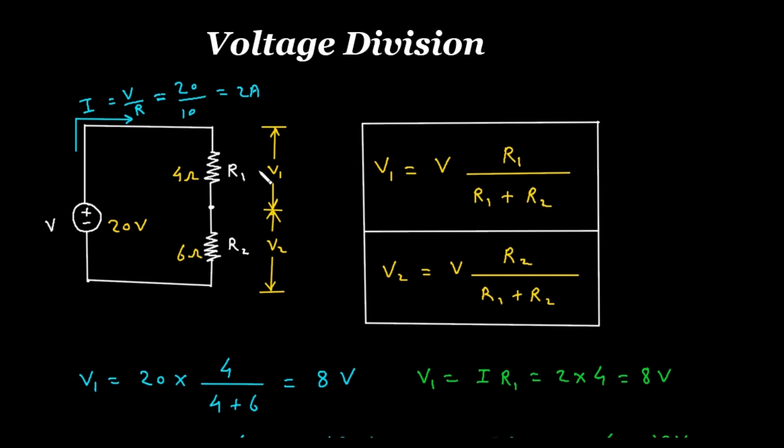So here we have to use voltage division rule or voltage divider rule. To find V1, it is equal to this voltage, that is the total supplied voltage. Then we have to multiply it by self-resistance value, that is R1, divided by R1, which is the self-resistance value, then plus.